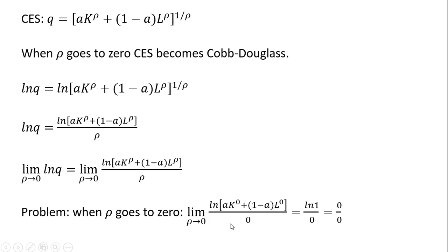Just to show what happens: rho goes to zero down here. We have k raised to the power of rho — putting zero in for rho, k raised to the power of zero is just one. That's multiplied by a. Likewise, l raised to the power of zero is just one. So in the numerator you have a plus one minus a, which simplifies down to one, and the natural log of one is just zero. So that's the problem.